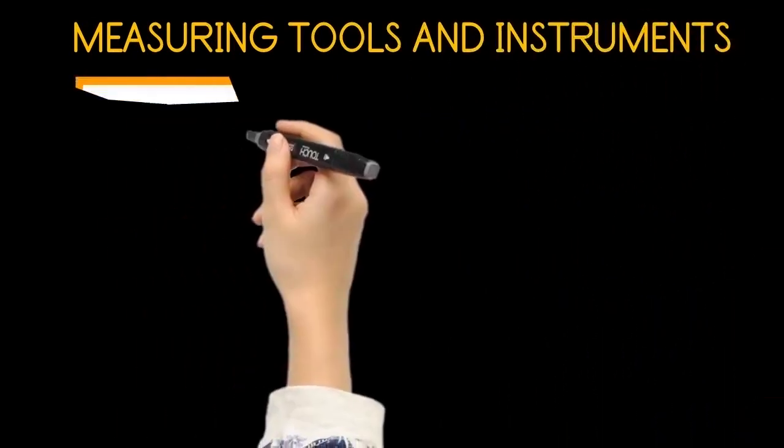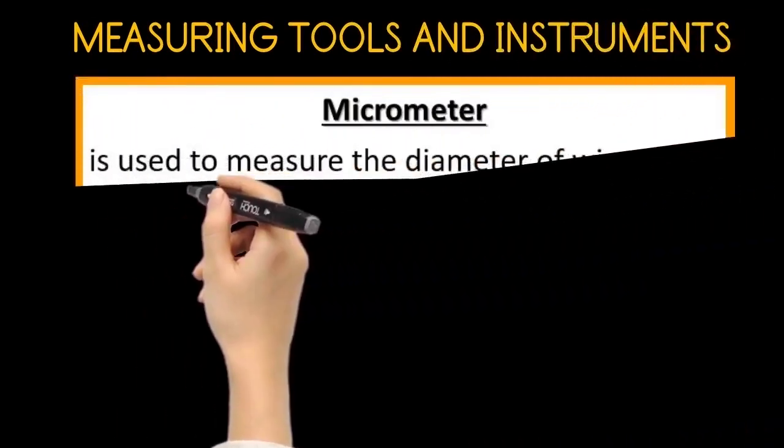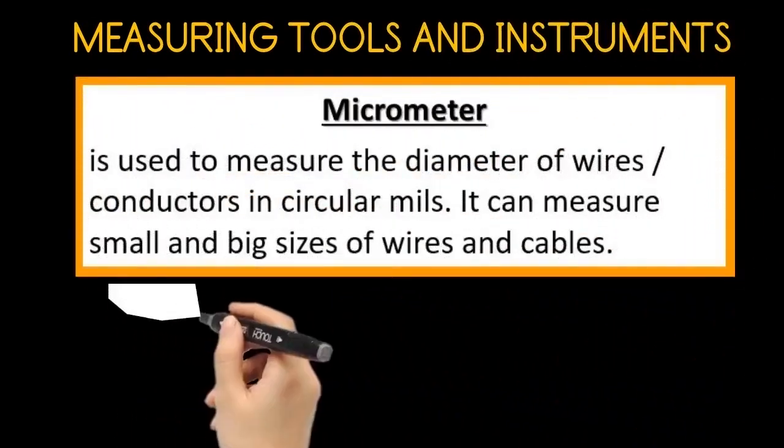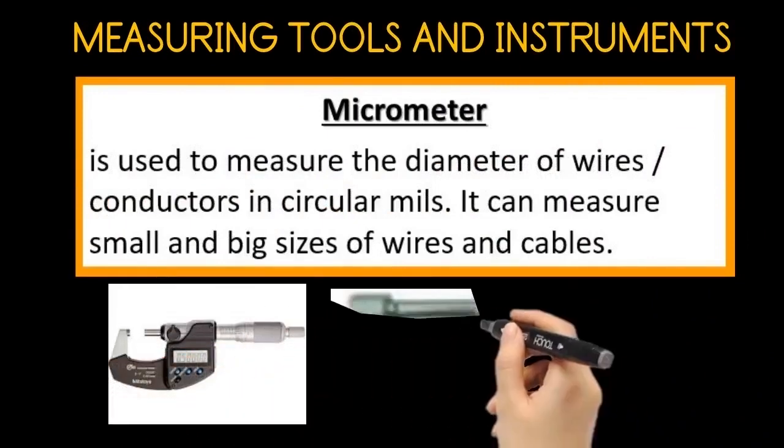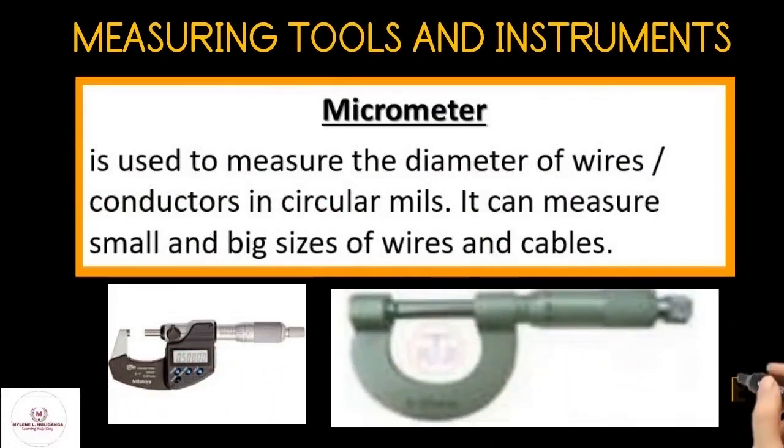The next tool is the micrometer. The micrometer is used to measure the diameter of wires or conductors in circular mills. It can measure small and big sizes of wires and cables. Below are examples of micrometer.